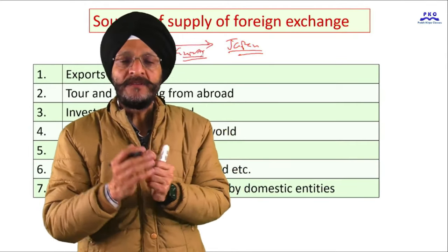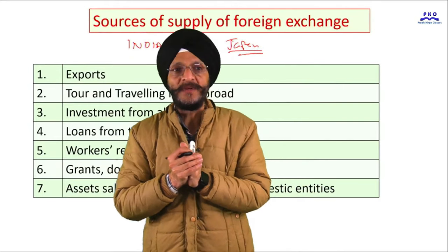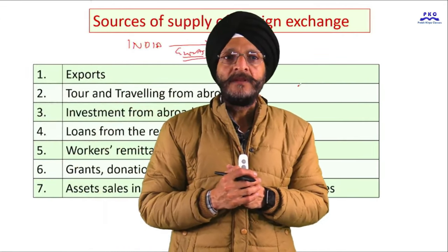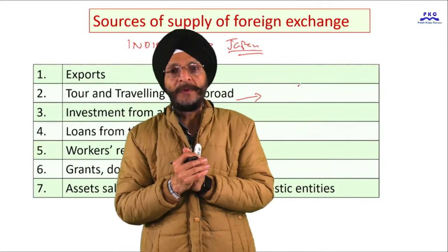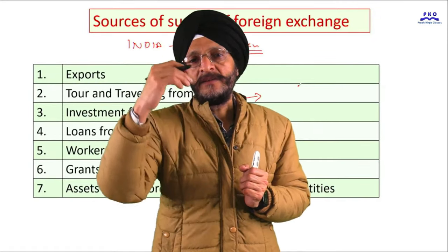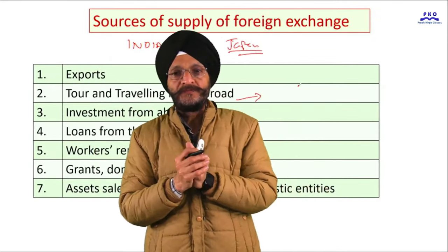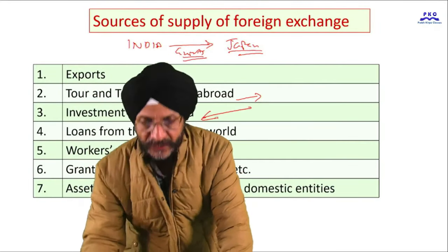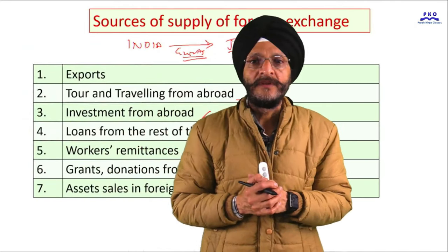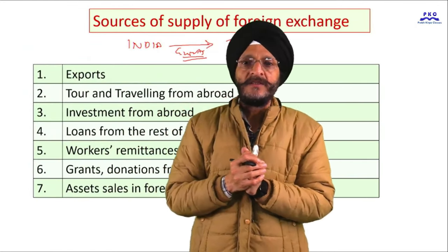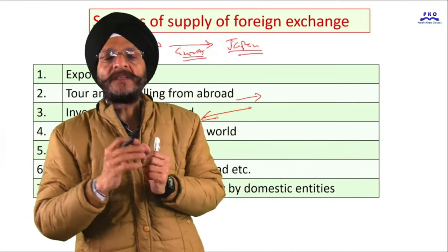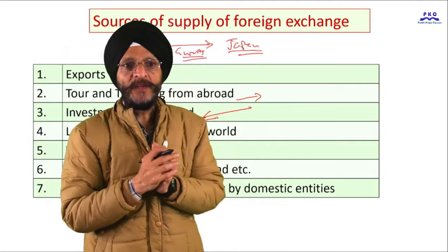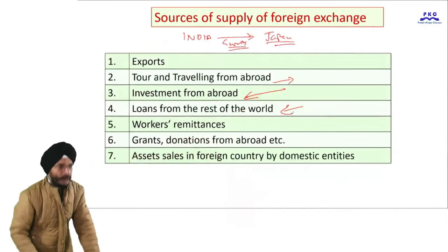In some cases, countries may insist that payment be made in their domestic currency. When tourists visit our country from abroad, they generally spend their foreign currency on food, expenses, and buying goods and services, which results in the supply of foreign exchange. Similarly, when foreigners invest in our country by purchasing buildings, industries, or land, foreign exchange comes into our country.